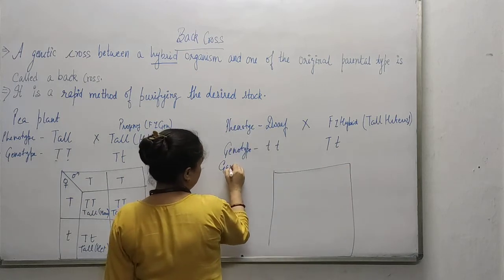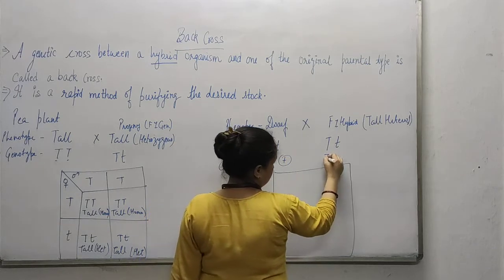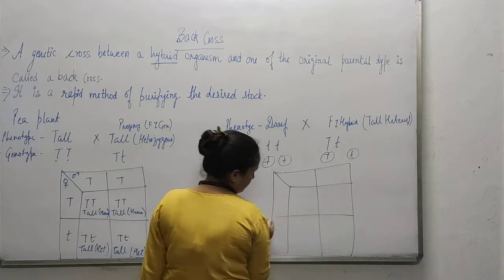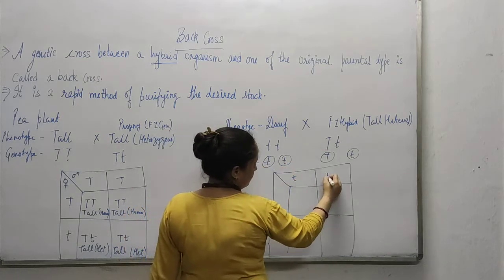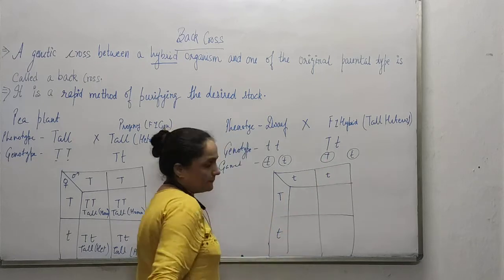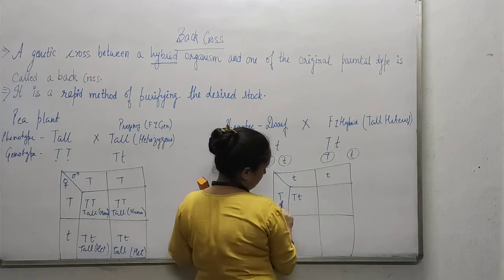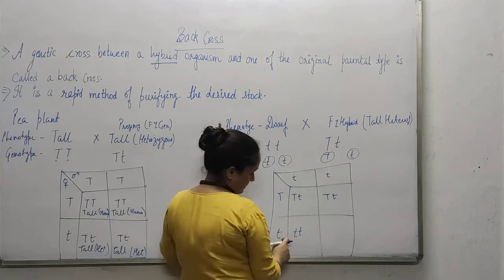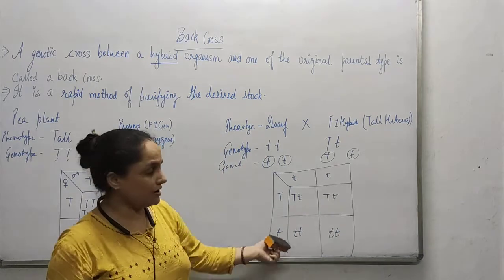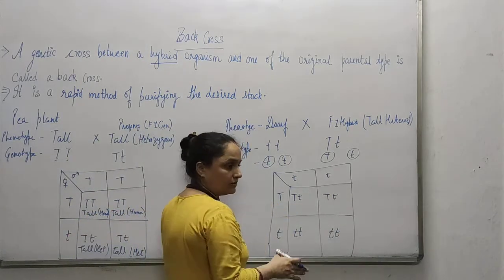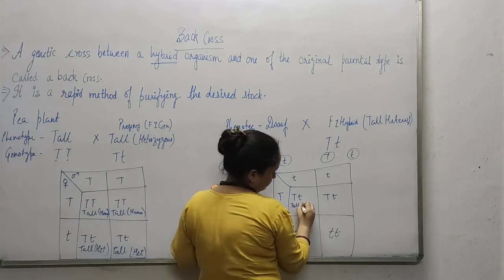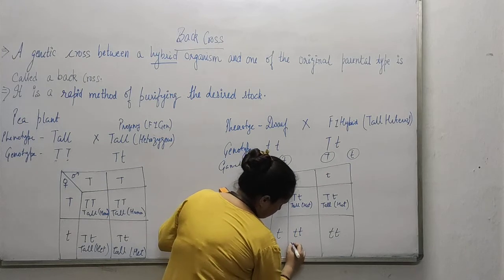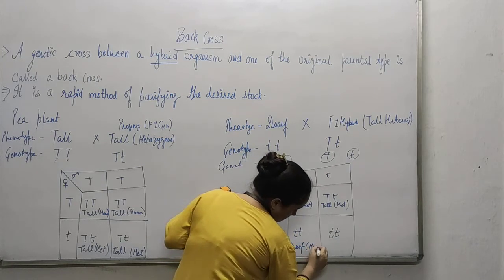We also have to make gametes before drawing the Punnett square. So here we are going to make a Punnett square. From this cross, what you get is: upper case T with lower case T (Tt), upper case T with lower case T (Tt), both lower case T (tt), and both lower case T (tt). So here you can see that the ratio you get between tall and dwarf is: two heterozygous tall and two homozygous dwarf.